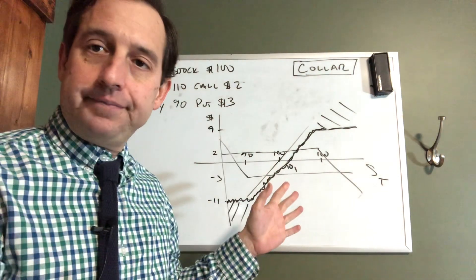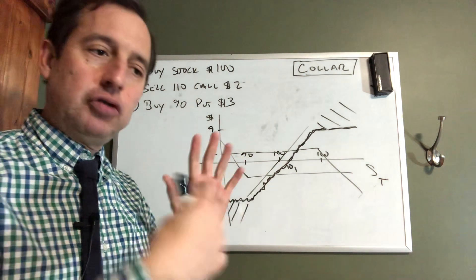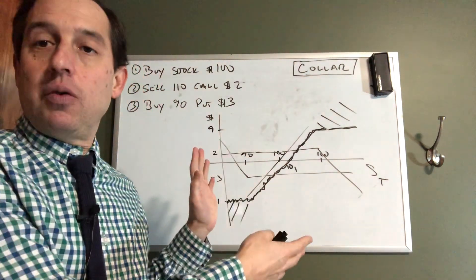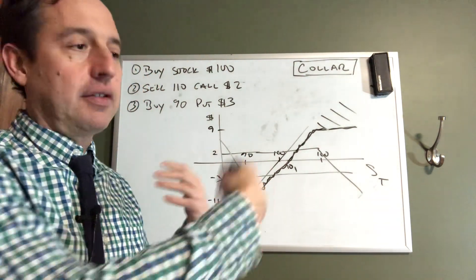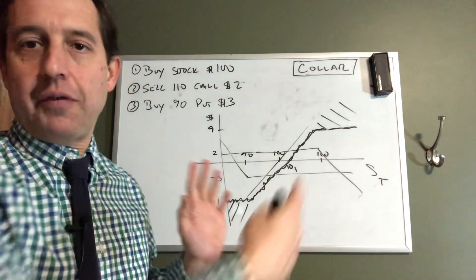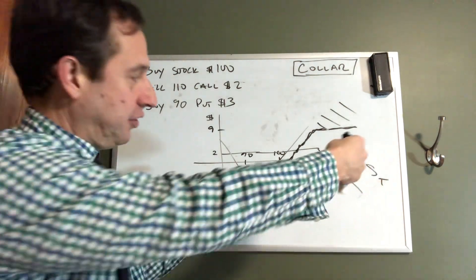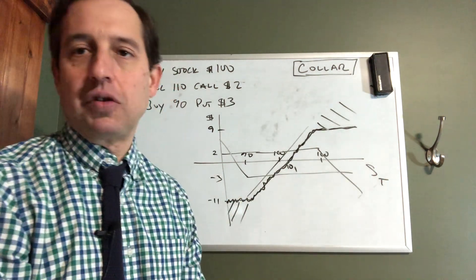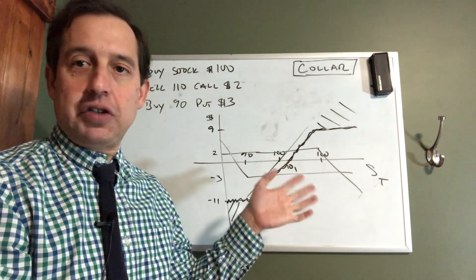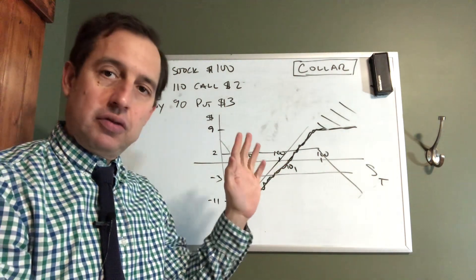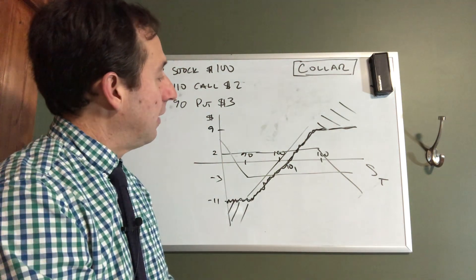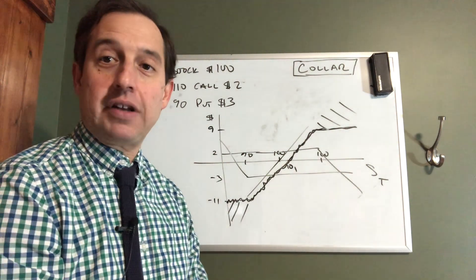So collar is a general finance term. This is how you put it on in stock, and it works similarly for interest rates — you're just limiting your exposure to a certain interval. You can do it more cheaply with just two option trades using a bull call spread. Have a great day.